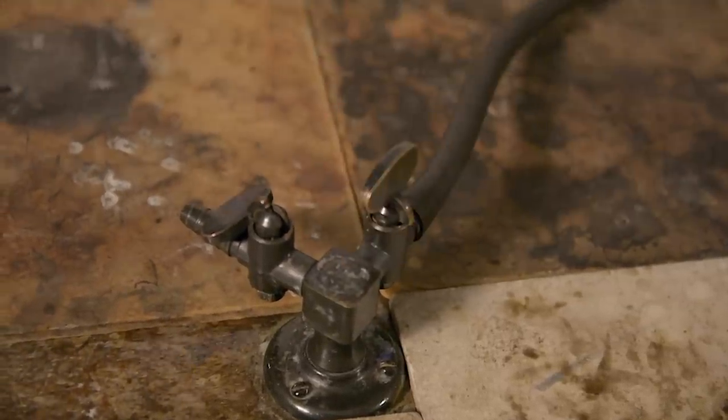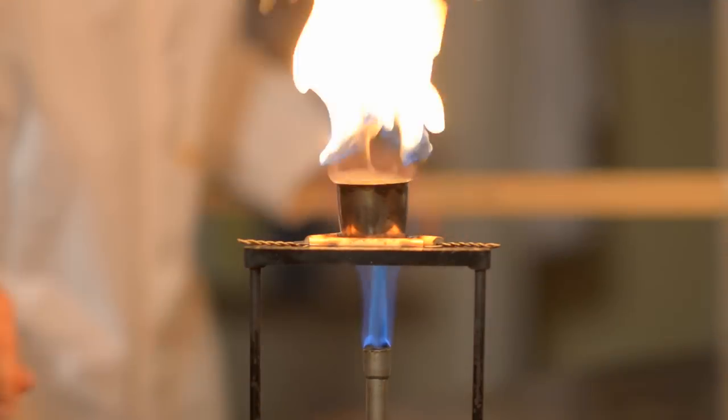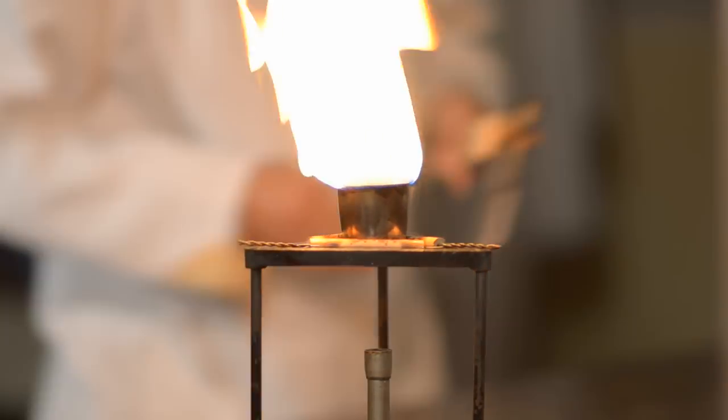When you're ready to do the demo, heat the oil for a few minutes until the vapor ignites. Once it's burning, switch off the Bunsen burner, then stand well back and use the meter rule to pour water onto the burning oil.